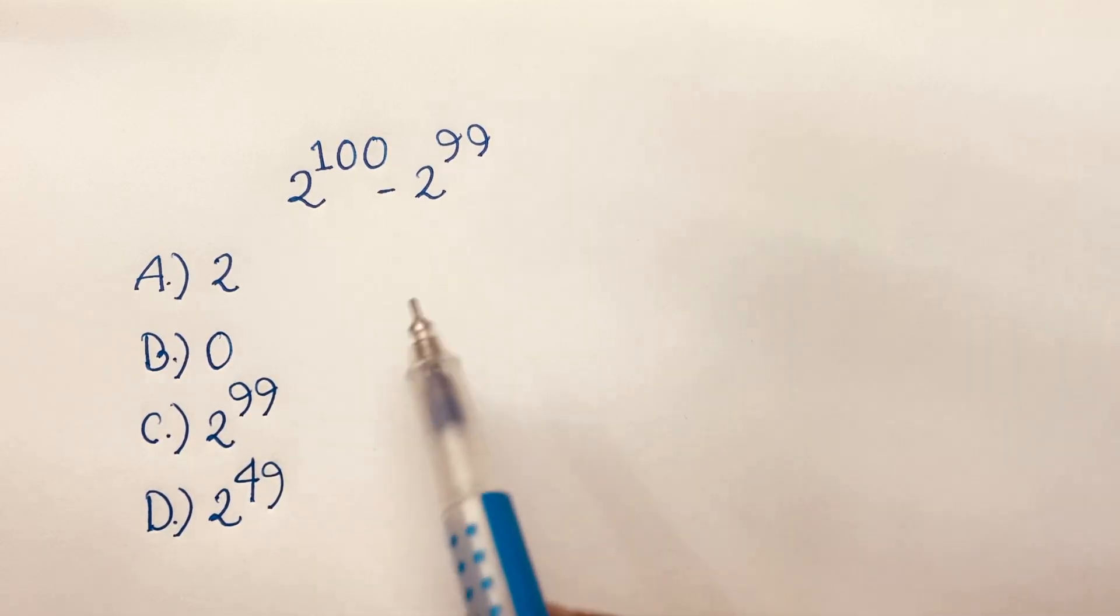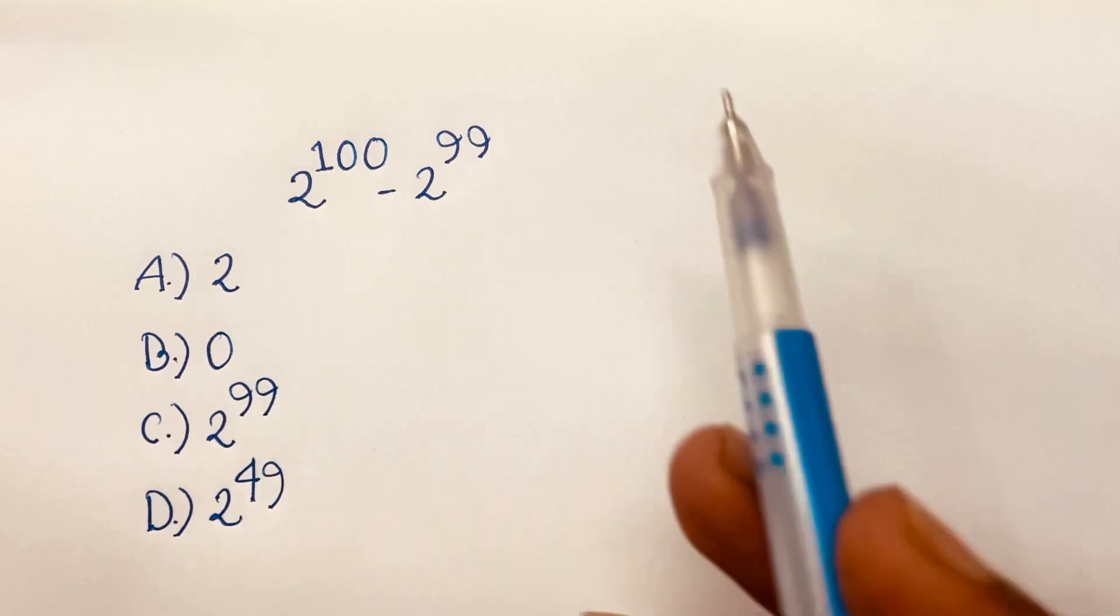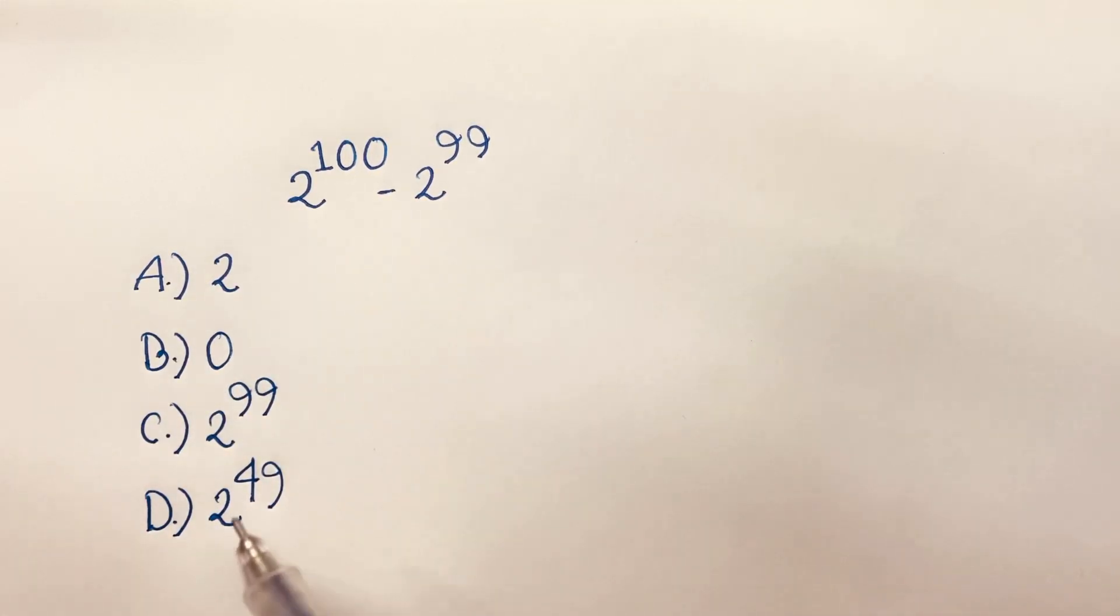Hello everyone, how to solve 2 to the power 100 minus 2 to the power 99 is equal to what? We have 4 options.